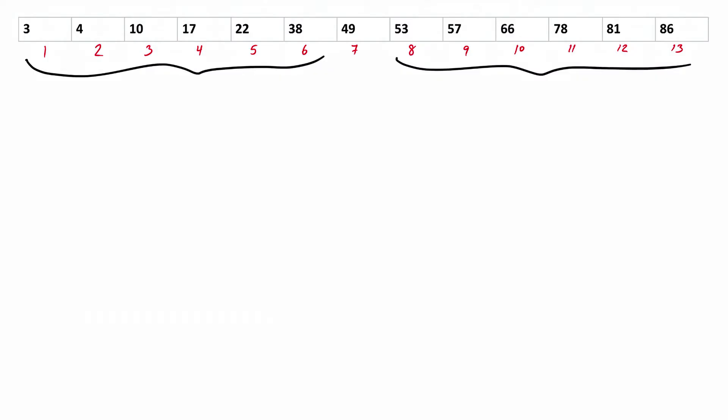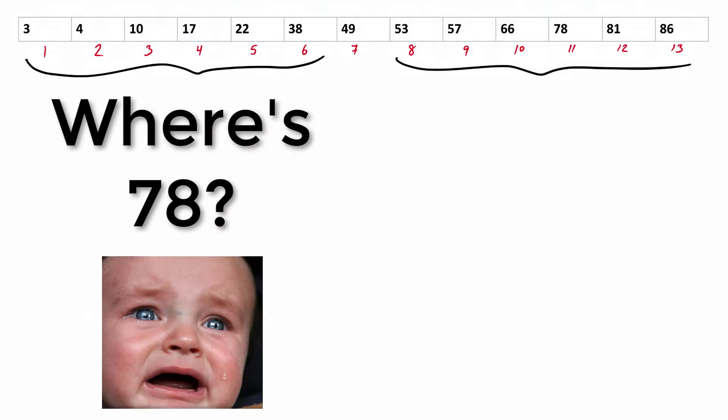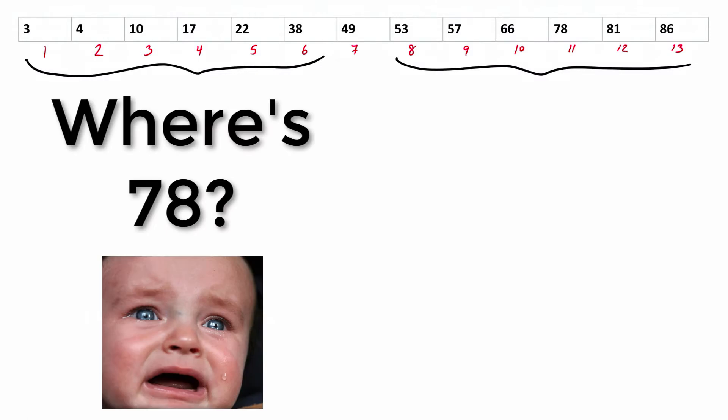The binary search algorithm can tell us the position of a number that we're looking for in a sorted list of numbers. So if you remember from the previous video, we were able to find a value in an unsorted list. For binary search, all the items in the list must be sorted.